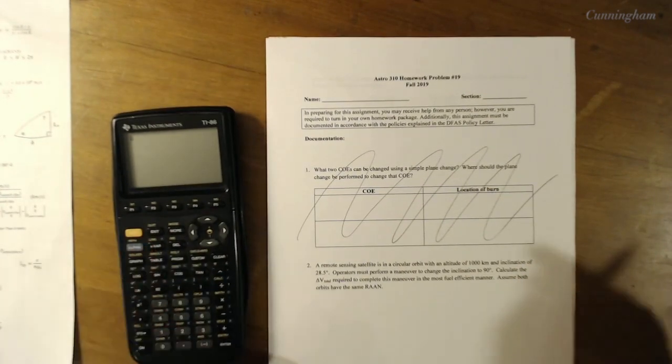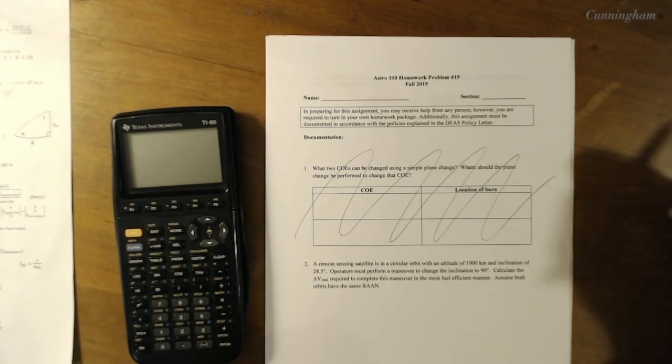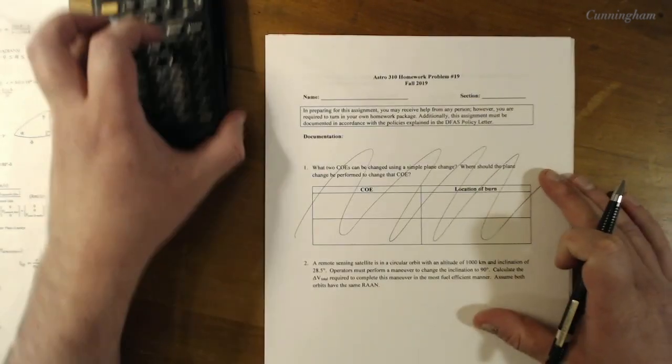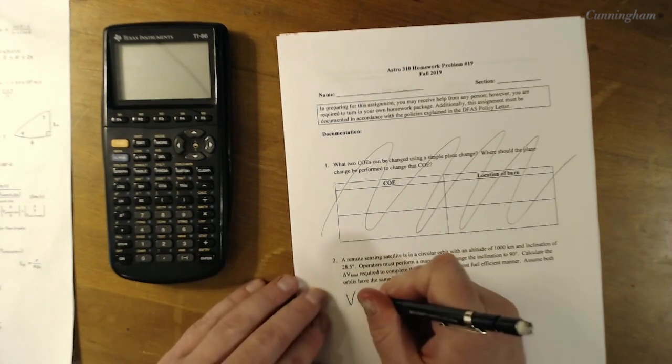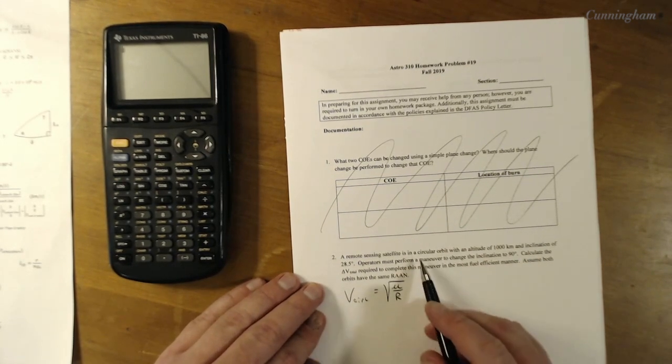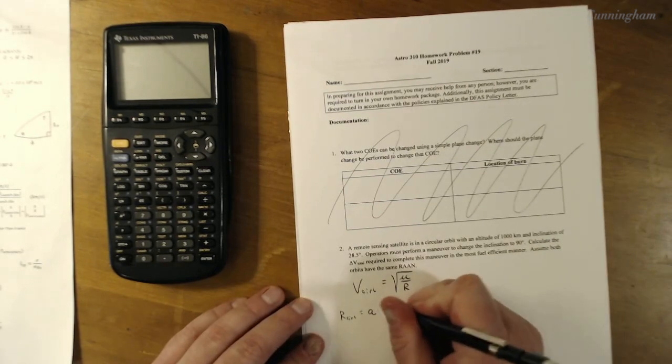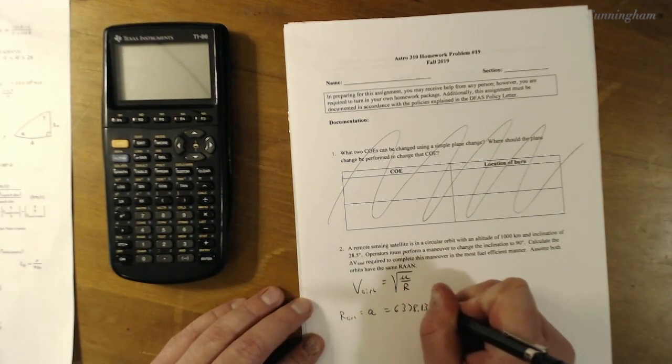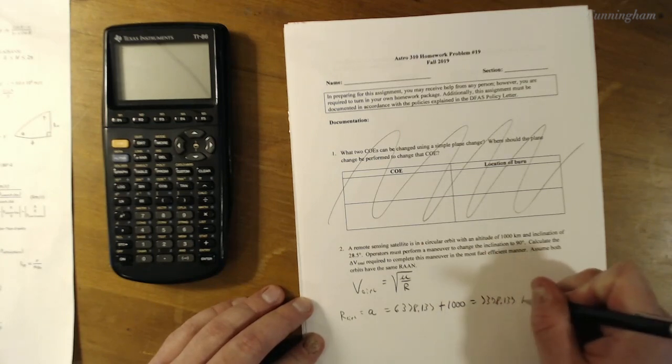So the first problem says, a remote sensing satellite is in a circular orbit with an altitude of a thousand kilometers, an inclination of 28.5 degrees. Operators must perform a maneuver to change the inclination to 90 degrees. Calculate the total delta V required to complete this maneuver in the most fuel-efficient manner. This ends up being a very easy money kind of problem.